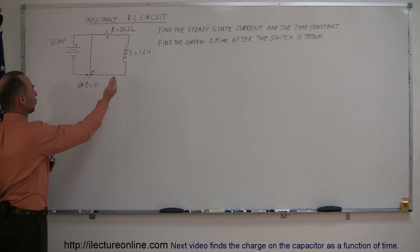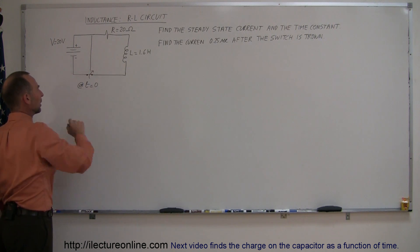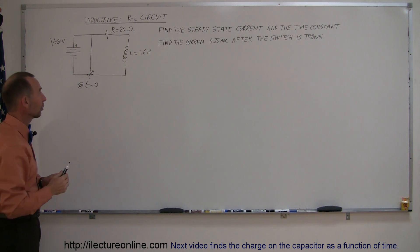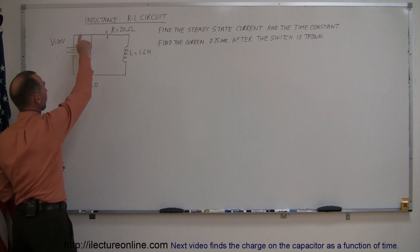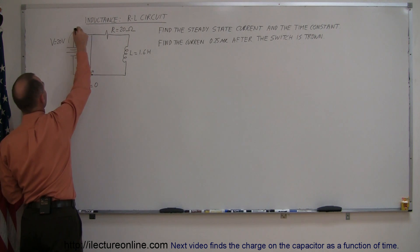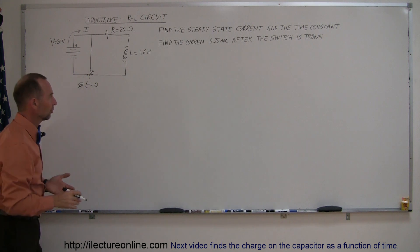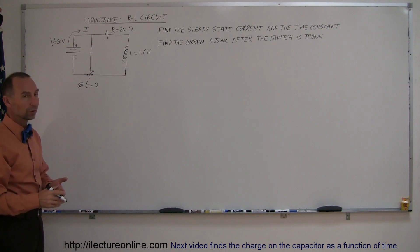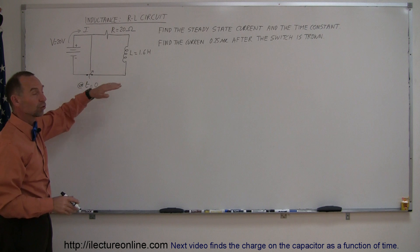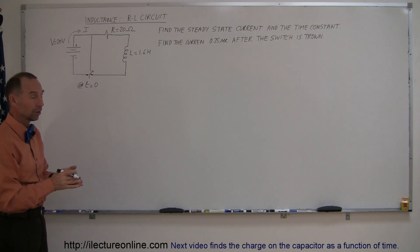Now assume that the switch is in this position before we do anything else and it's been like that for a long time and current is flowing around the circuit. We call that a steady state condition, and in a steady state condition when the current is not changing the inductor offers no opposition to the current flow because inductors only oppose the current that changes. When the current is trying to increase or decrease the inductor then comes into play.